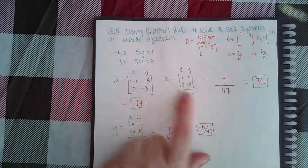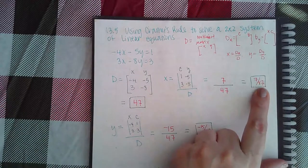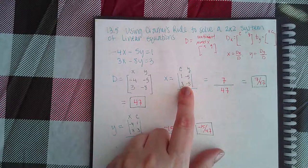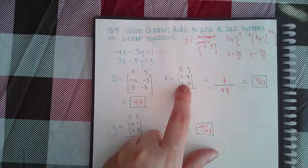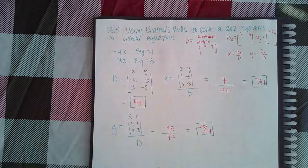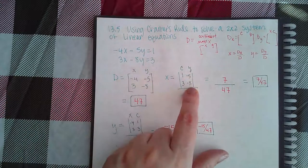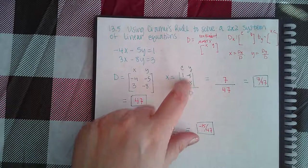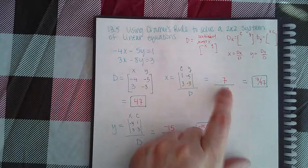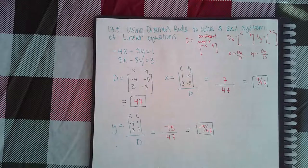Now it asks me to fill in the matrix and then tell them what x is. So I filled in the matrix. I replaced x with the constants, 1, 3. The y column stayed the same. I did negative 8 minus 15, which actually minus a negative 15, which is negative 8 plus 15, which is where the positive 7 came from.